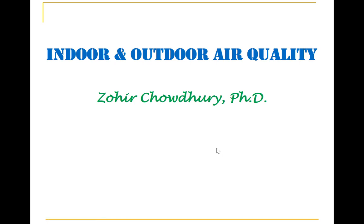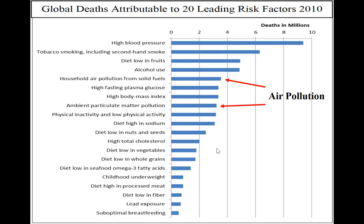My name is Zuhri Chodri and today we'll talk about indoor and outdoor air quality. This graph shows the global death attributable to 20 leading risk factors from a 2010 study. We can see that two risk factors — household air pollution from solid fuel usage and ambient particulate matter pollution, which is outdoor air pollution — are two leading causes of millions of deaths that are air pollution related.